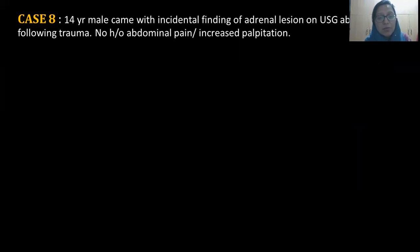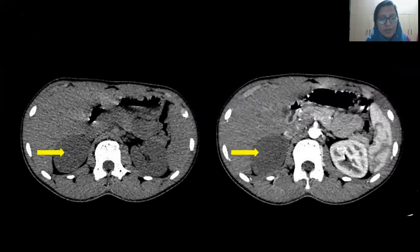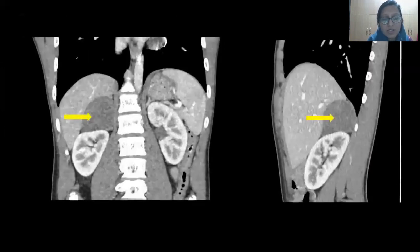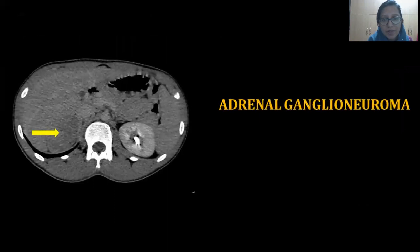Our last case: A 14-year-old male came with an incidental finding of an adrenal lesion on ultrasound of the abdomen following trauma. No history of abdominal pain or increased palpitation. CT showed a well-defined rounded mass lesion of homogenous attenuation involving the expected location of the right adrenal gland on top of the right kidney. On post-contrast, the lesion showed heterogeneous enhancement which seemed to persist into the delayed phase. The resection was done and biopsy came as ganglioneuroma. We had given this possibility, though since we did not see any fat densities within, we also considered the possibility of angiomyolipoma with minimal fat.